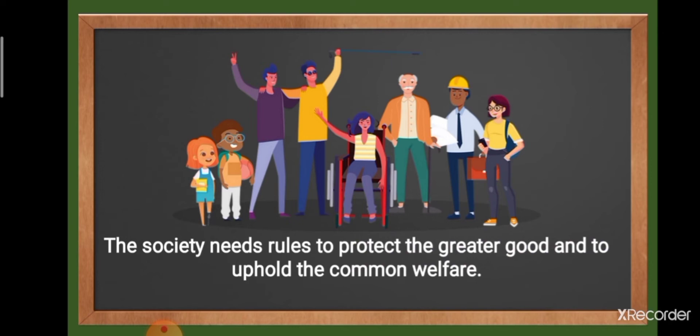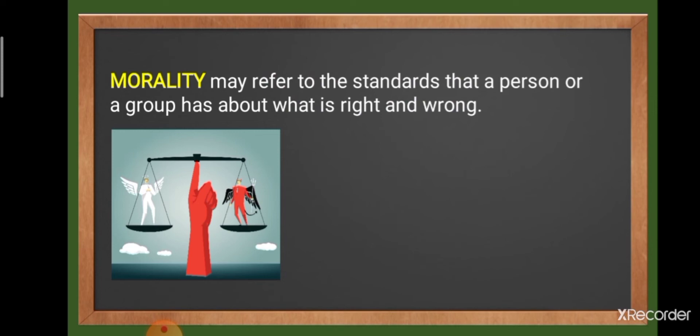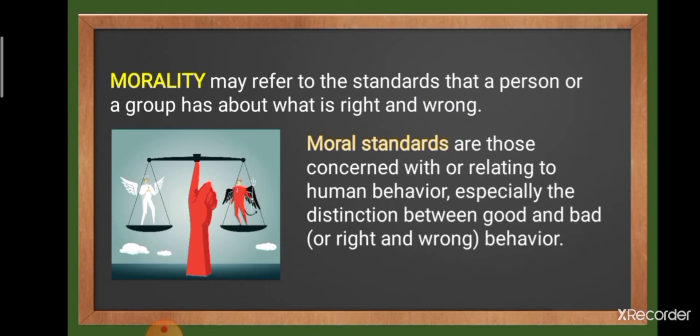While rules are often based on concepts of morality, one would realize that not all rules are moral rules. This also means that not all standards are moral standards. We would quickly review what morality is and then discuss the difference between moral and non-moral standards. Morality may refer to the standards that a person or a group has about what is right and wrong. Moral standards are those which are concerned with human behavior, especially the distinction between good and bad, or what we consider to be right and wrong behavior. While rules give society a general guide to what its citizens can and cannot do, moral standards provide individuals a compass which helps them discern the rightness or wrongness of their actions.